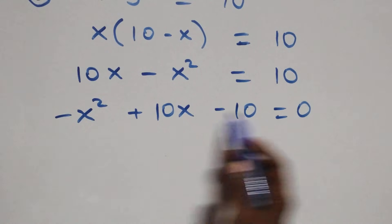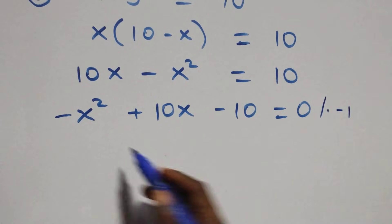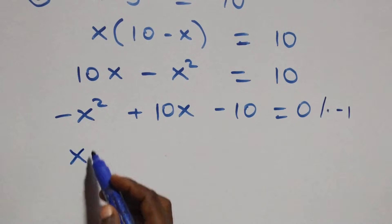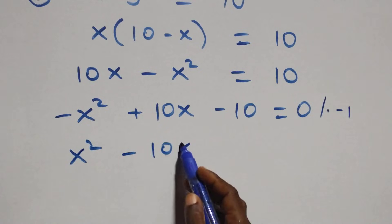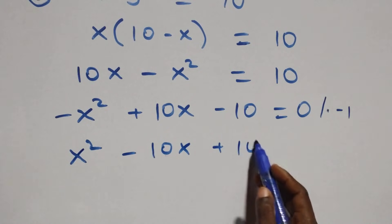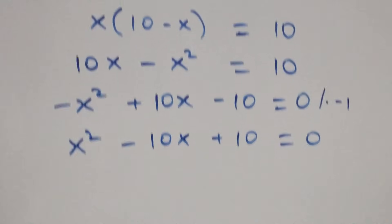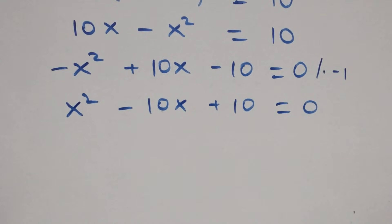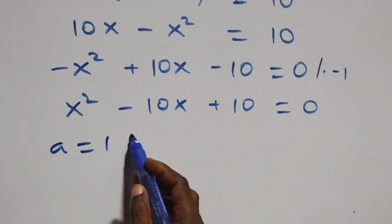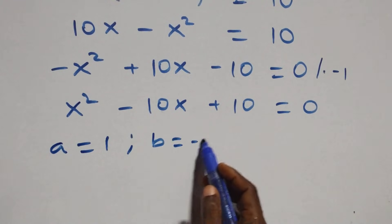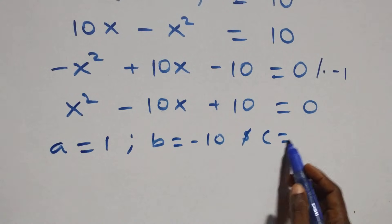We multiply through by minus 1, and this becomes x squared minus 10x plus 10 equals to 0. Here we have a quadratic equation where a equals to 1, b equals to minus 10, and c equals to 10.